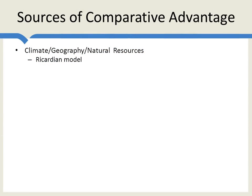The most obvious differences are those associated with climate, geography, or natural resources. This is how Ricardo first phrased the comparative advantage model, in terms of wine and cloth, with Portugal being better at producing wine and England having a comparative advantage in producing cloth. So when we're thinking about agriculture, mining, or tourism, these differences in climate can create differences in comparative advantage.